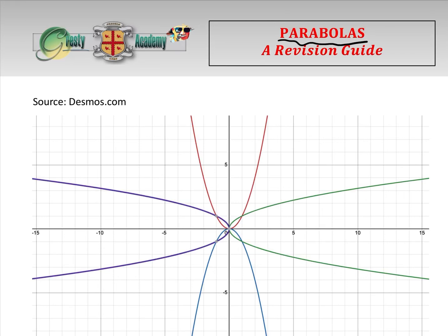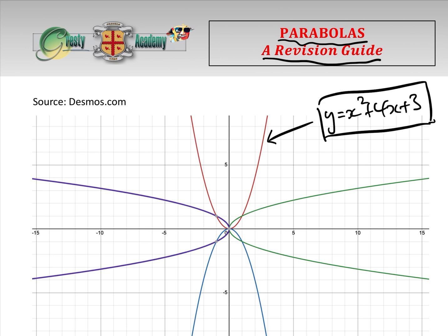In this video we're going to be doing parabolas, a revision guide. People know quite a lot about parabolas but don't realise it — they know things like y equals x squared add 4, x add 3 or whatever. That is a parabola. There are basically four different types of parabolas shown here on this chart courtesy of desmos.com. We're going to go through the basics and then at the end go through four typical questions that would appear on college entrance tests.